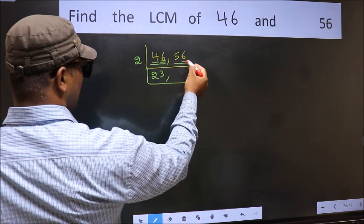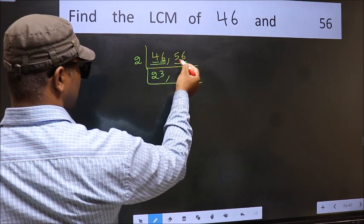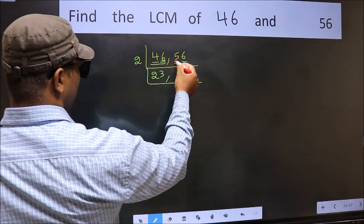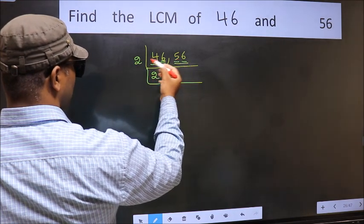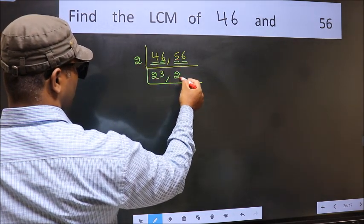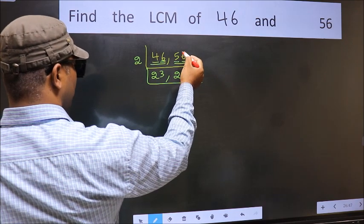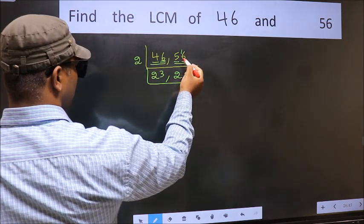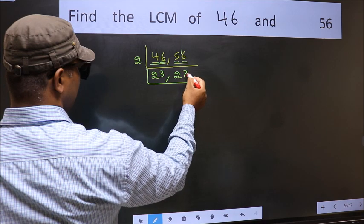Now the other number 56, last digit 6, so this is divisible by 2. First number 5, a number close to 5 in the 2 table is 2 times 2 is 4. 5 minus 4 is 1, 1 carried forward makes 16. When do we get 16 in the 2 table? 2 times 8 is 16.